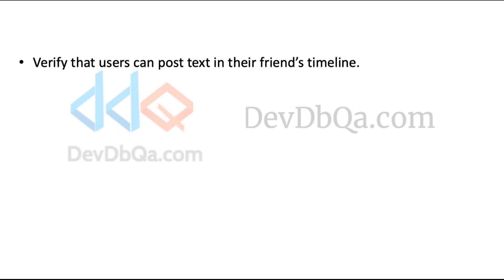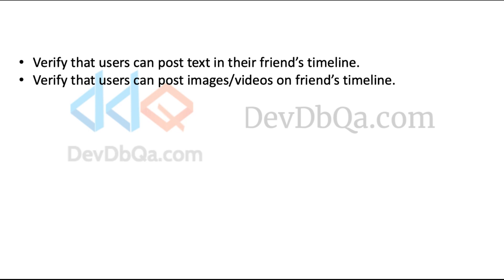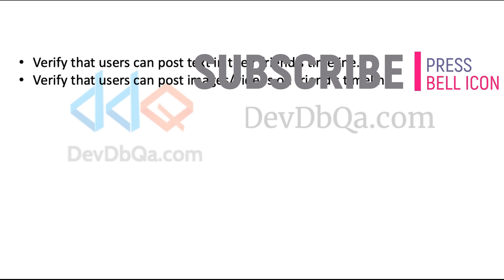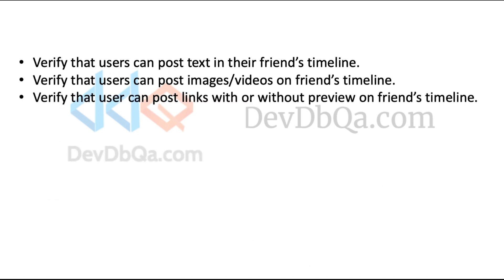Verify that user can post text on their friends' timeline. Verify that user can post images or videos on friends' timeline. Verify that user can post links with or without preview on friends' timeline — the user should be able to post links on the friends' timeline.